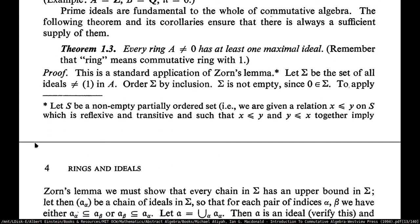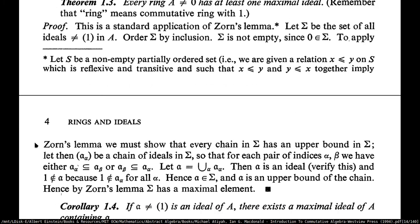Every ring has at least one maximal ideal. You have the sigma set of all ideals — that was S in our case — and we order the set by inclusion. S is not empty since zero must be in there.